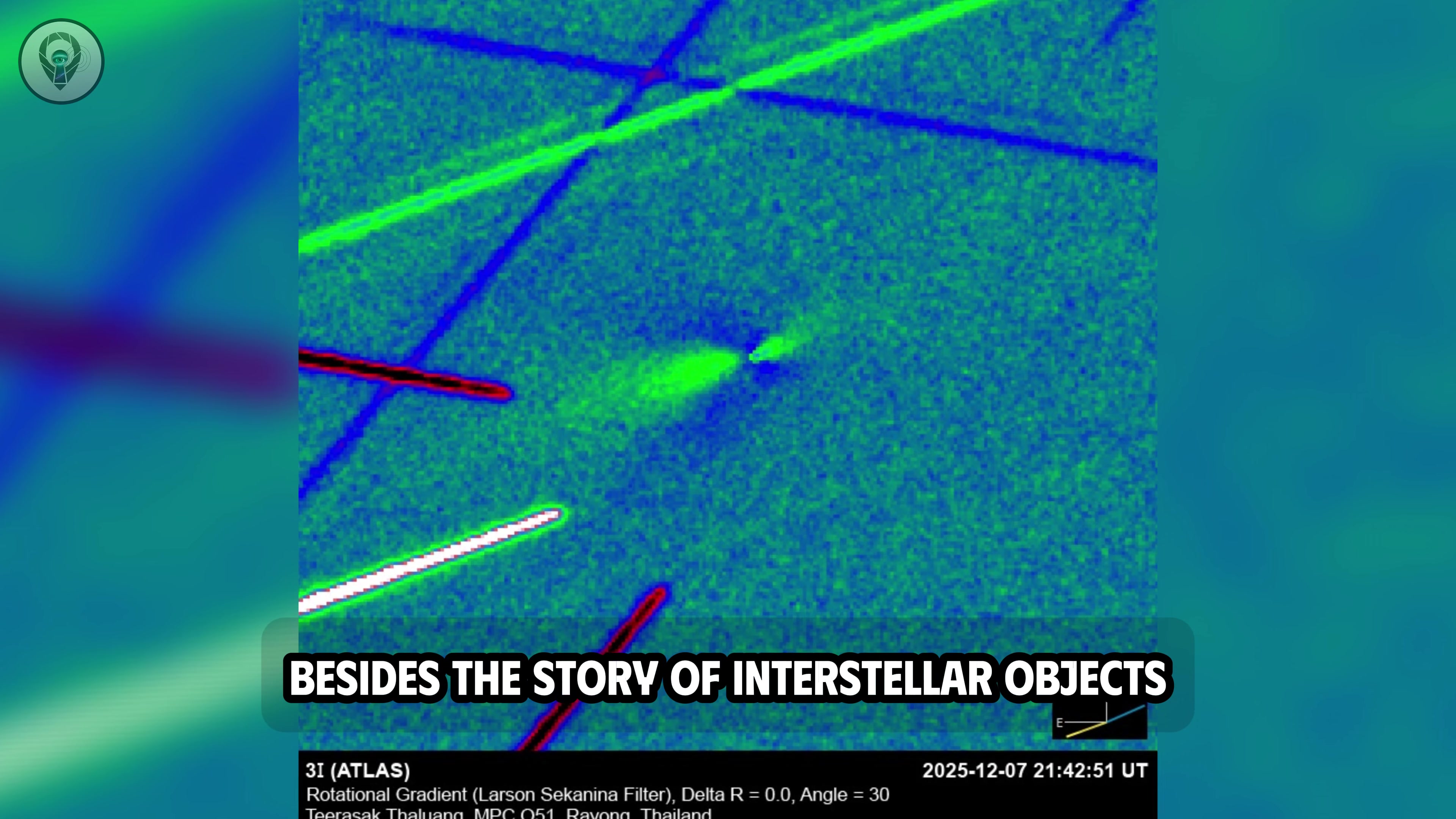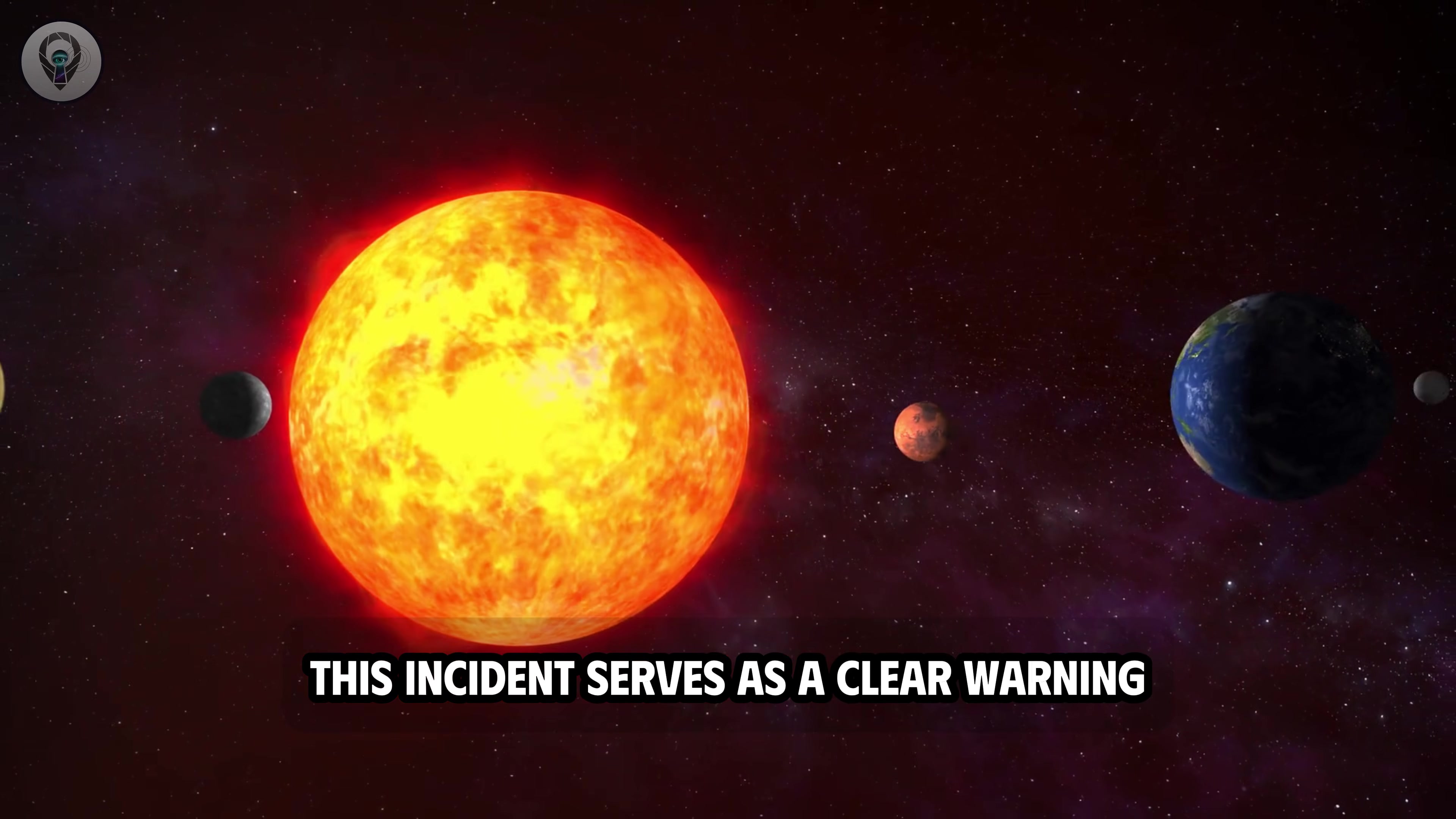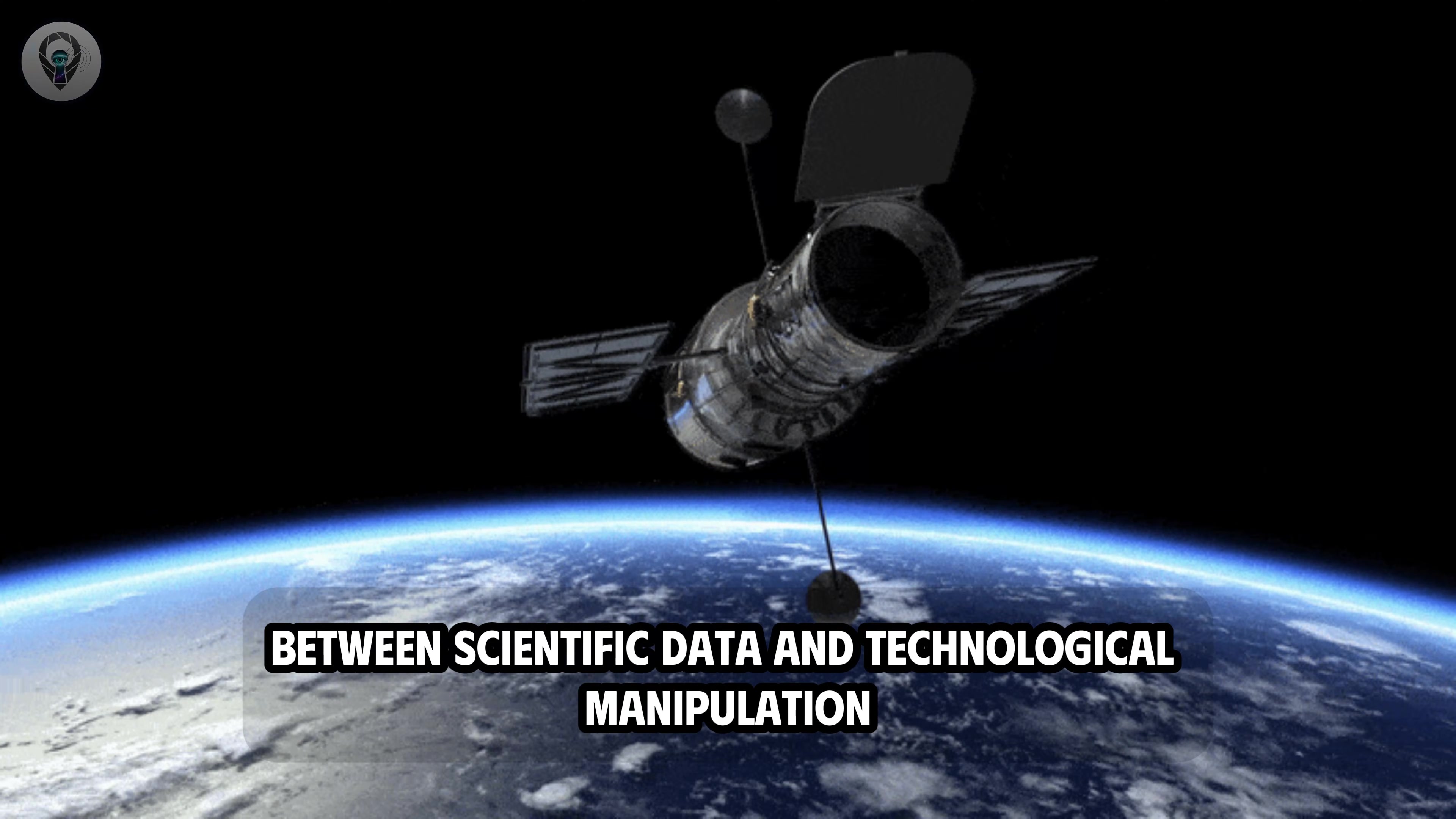Besides the story of interstellar objects, another issue raised is the risk of artificial intelligence in falsifying scientific information. Recently, videos using AI to fake the images and words of scientists have appeared on YouTube, confusing the public. In one notable case, this fake content was quickly detected, reported, and removed after media platforms and legal counsel intervened. This incident serves as a clear warning about the challenges of fact-checking in the AI era, where the line between real and fake content is increasingly blurred. In the context of already controversial topics like the Three-Eye Atlas, the risk of misinformation makes it even harder for the public to distinguish between scientific data and technological manipulation.